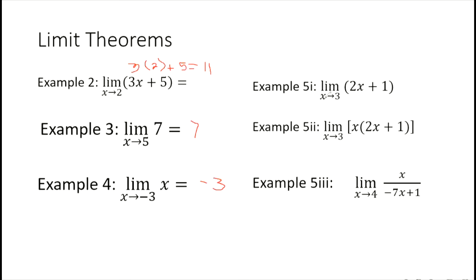Example 5i: we have the limit of 2x plus 1, which is a linear function, where x is approaching 3. We directly substitute: 2 times 3 plus 1 gives us 6 plus 1, so we have 7. Therefore, the limit of 2x plus 1 where x is approaching 3 is 7.